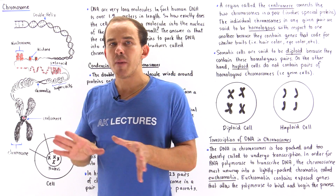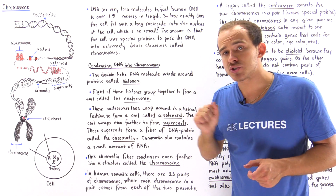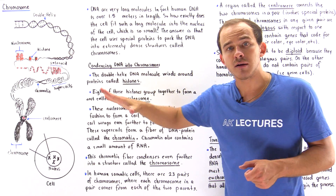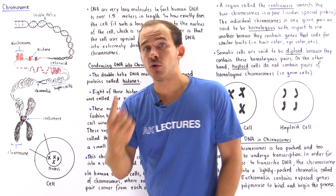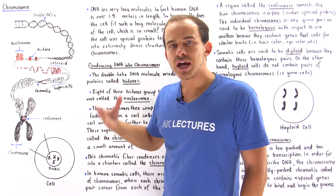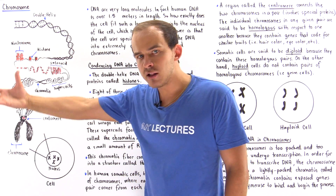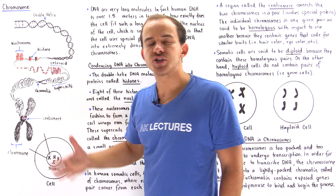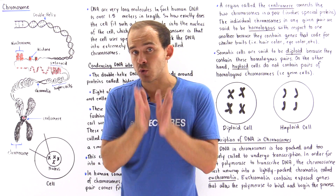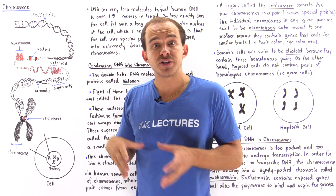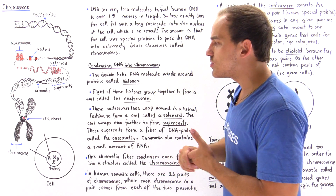Every single somatic cell in the human body consists of 23 pairs of chromosomes, where each chromosome in a pair comes from each one of the parents. In the following diagram, this is only one of the 23 pairs in our human cell. One chromosome comes from the male parent and the second chromosome comes from the female parent, and we join these two chromosomes at the center at a location known as the centromere.